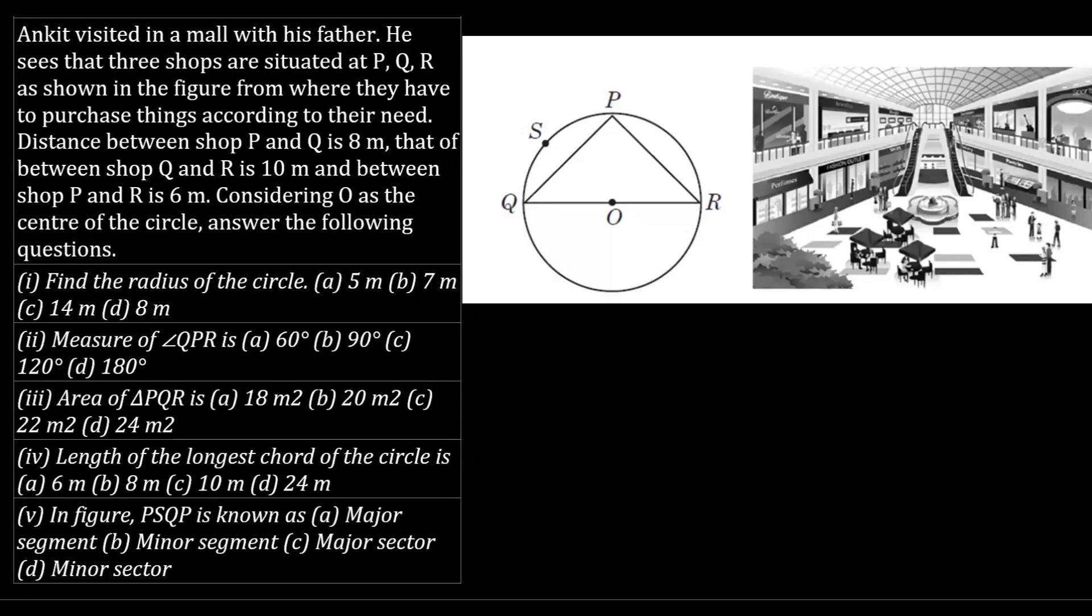I have taken one CBSE question from the chapter Circle, Class 10. The question says Ankit visited a mall with his father and he sees three shops situated at points P, Q, R as shown in the figure to purchase things according to their need.